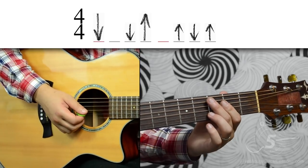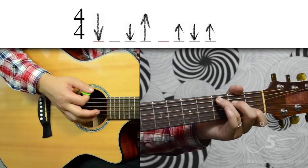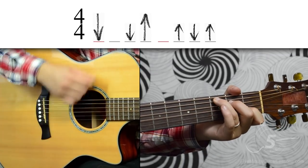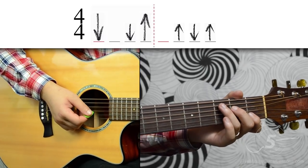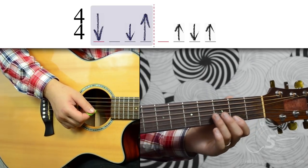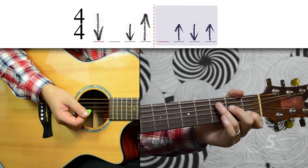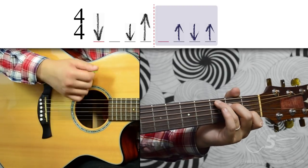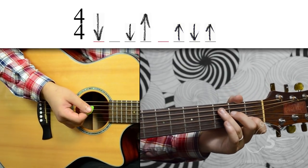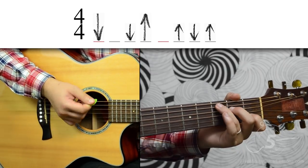The strumming pattern used in this song goes down, down, up, up, down, up. And we can break that down into two parts. First we have down, down, up. And then we have up, down, up. And when we put that together we get down, down, up, up, down, up.